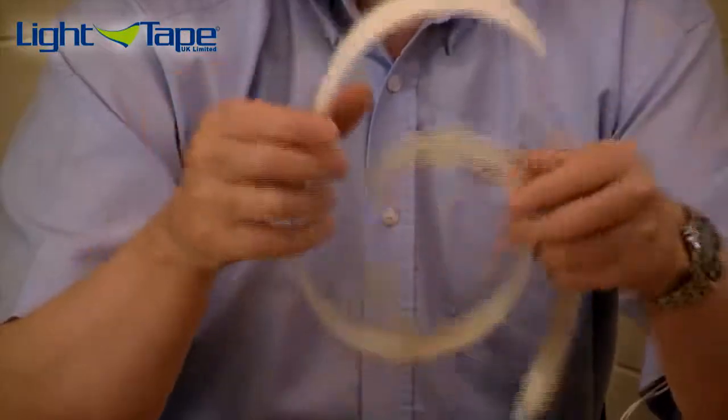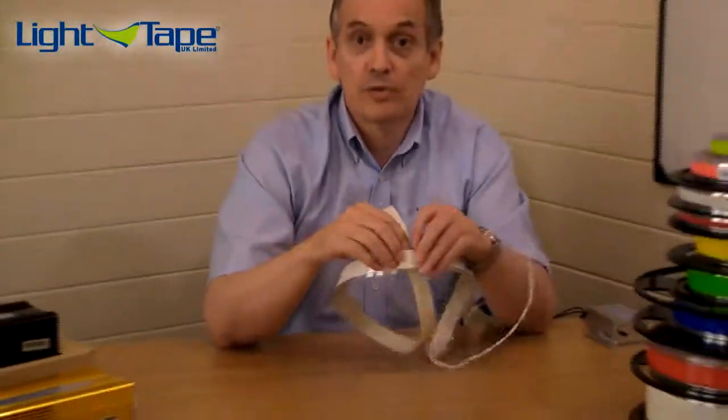Now, we can cut light tape from a hundred meter roll to any length, any desired length, just with a pair of scissors.